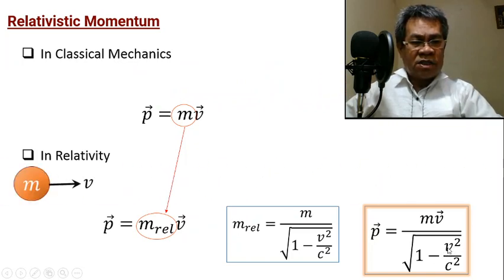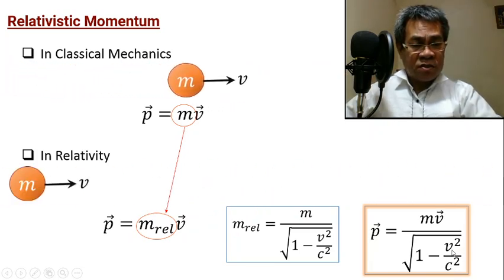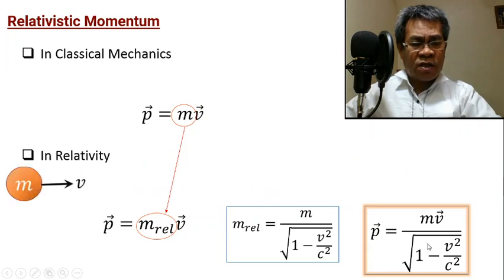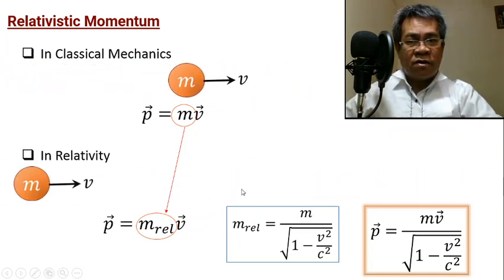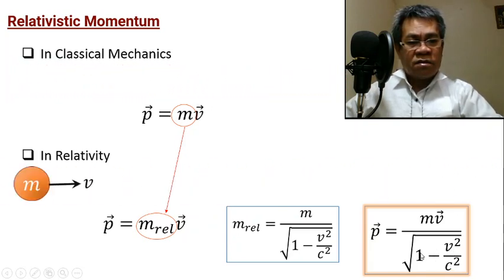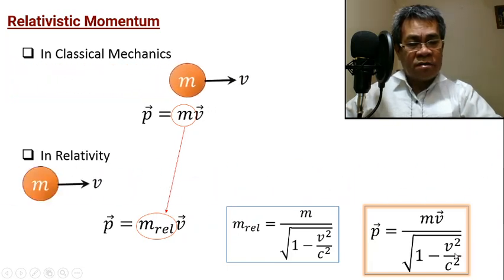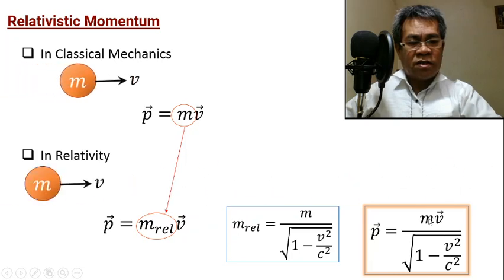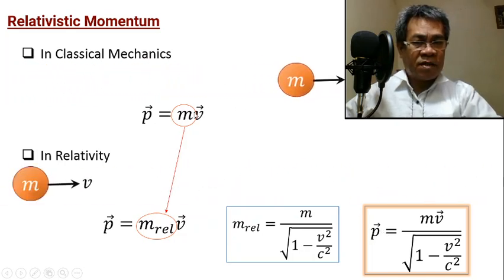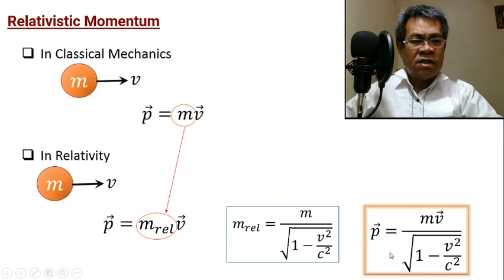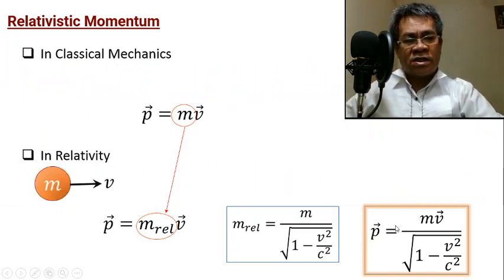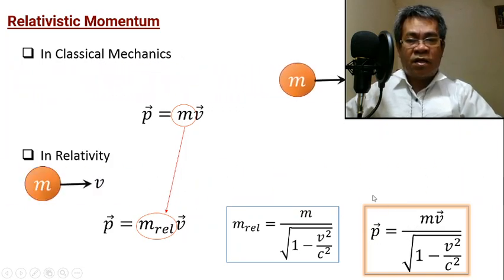If the velocity is much less than the speed of light, the denominator becomes 1, leading to the classical mechanics momentum formula. But if the velocity approaches the speed of light, the denominator becomes less than 1, so the momentum is greater compared to the classical formula. This is a generalized formula for momentum that can be used for any motion at any speed.